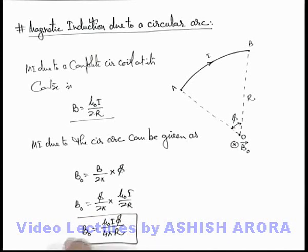That is the magnetic induction due to a circular arc of radius r subtending an angle phi at the center.